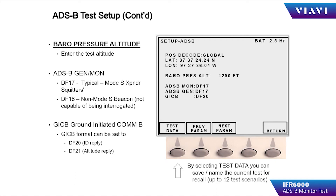Most generally, the testing you will be performing is transponder-based, so this should be selected as DF-17. If the testing you are performing is beacon-based, use DF-18.